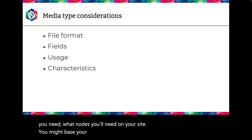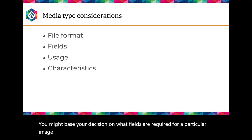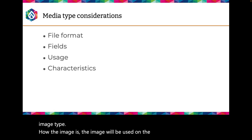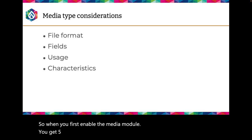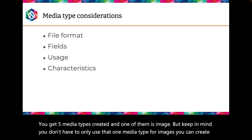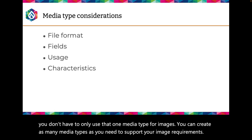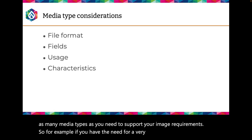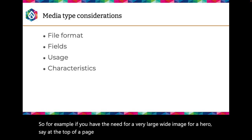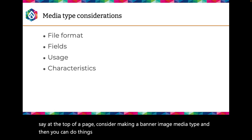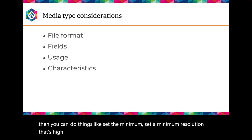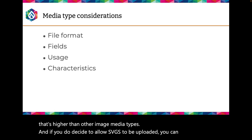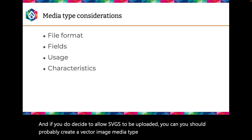If you use media entities, you'll need to determine which media types you'll need — similar to deciding what content types you need. You might base your decision on what fields are required for a particular image type and how the image will be used. When you first enable the media module, you get five media types, one of which is image. But you can create as many media types as you need. For example, if you need a very large wide image for a hero at the top of a page, consider making a banner image media type with a minimum resolution higher than other types. If you allow SVGs to be uploaded, you should probably create a vector image media type to handle SVG-specific requirements.